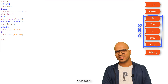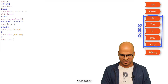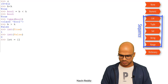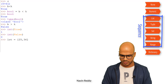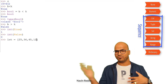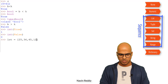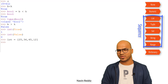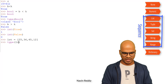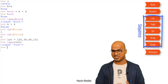We have worked with list before. To define a list: lst equal to square brackets with values — say 25, 36, 45, 12. Any number, any format. You can include strings as well. If I check the type of lst you can see it says type list.